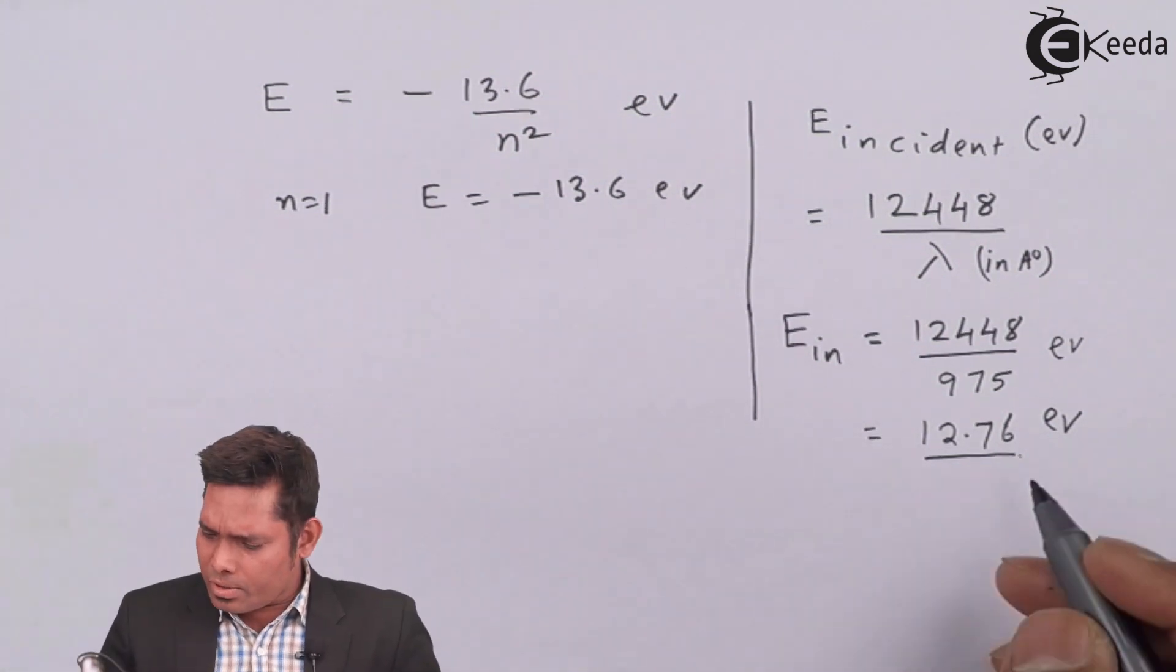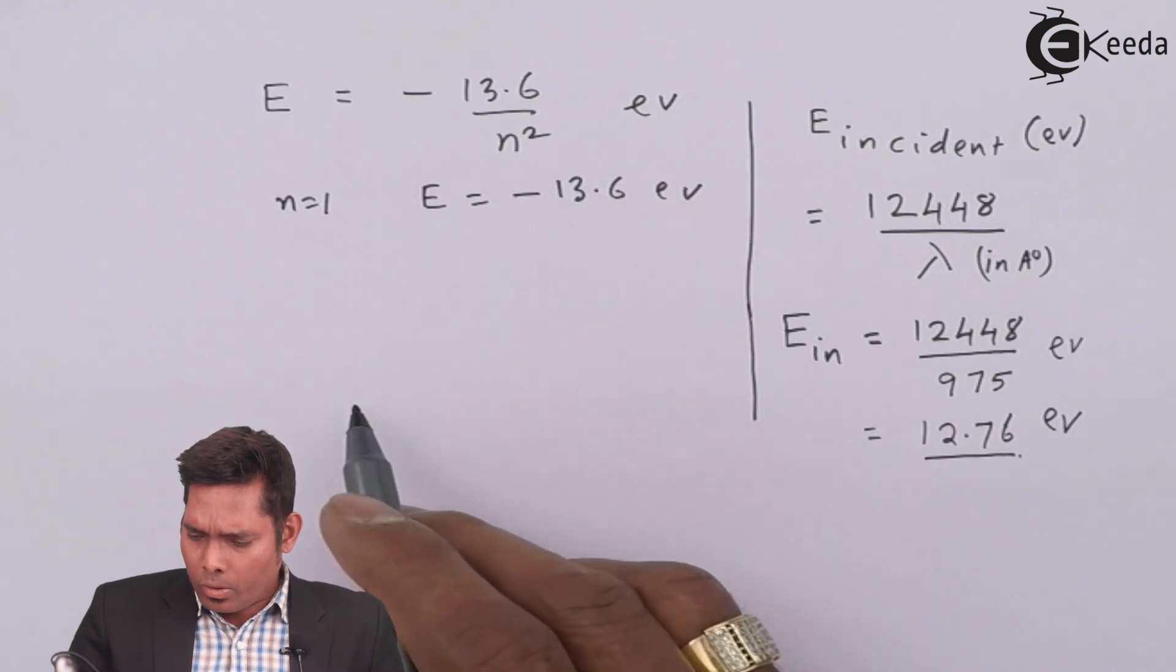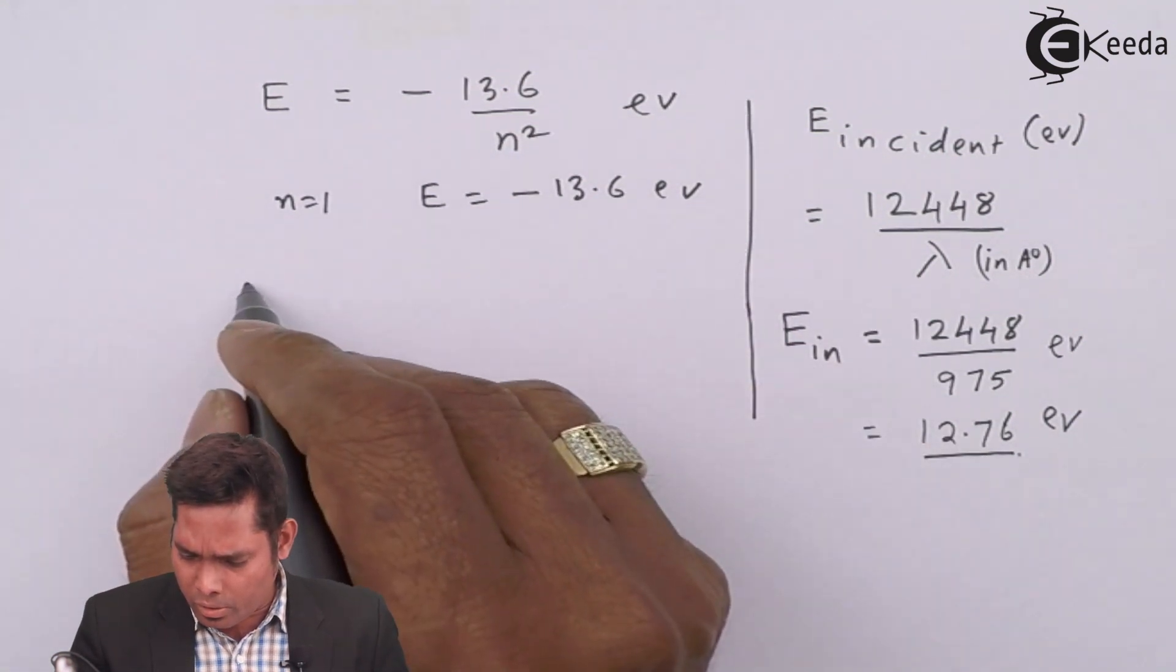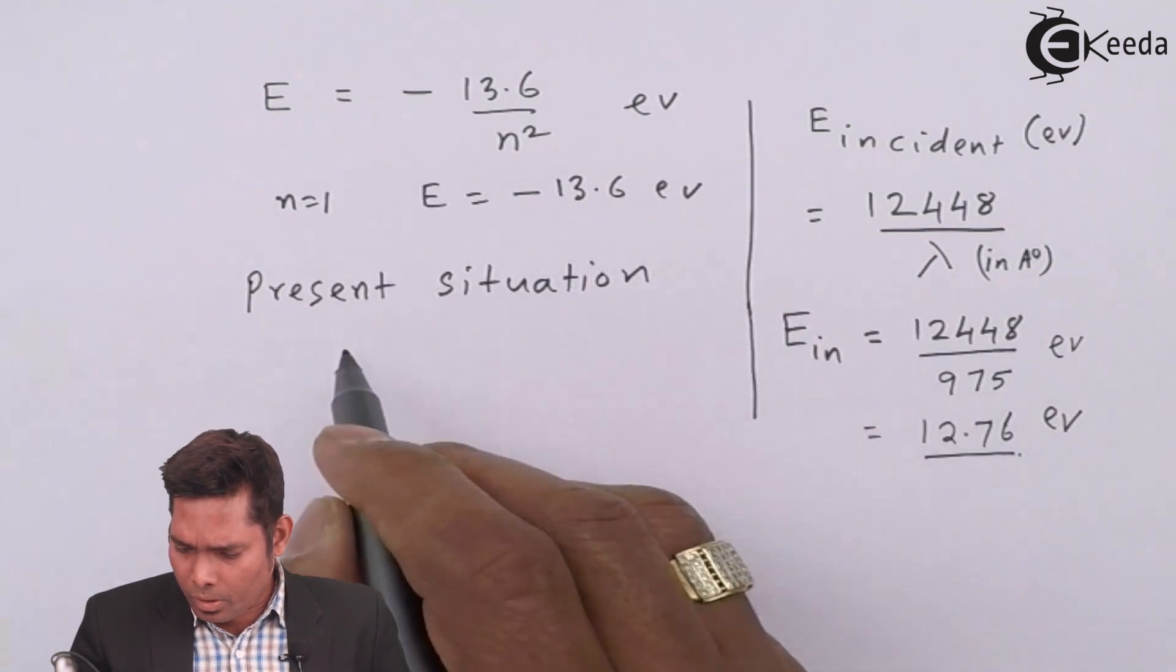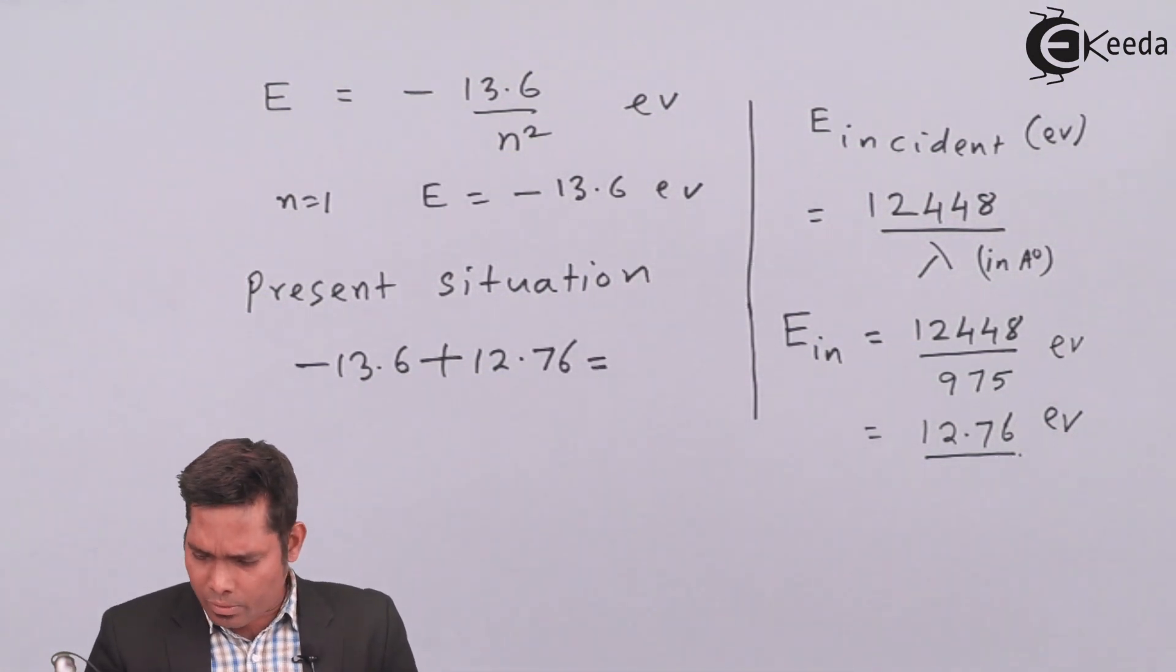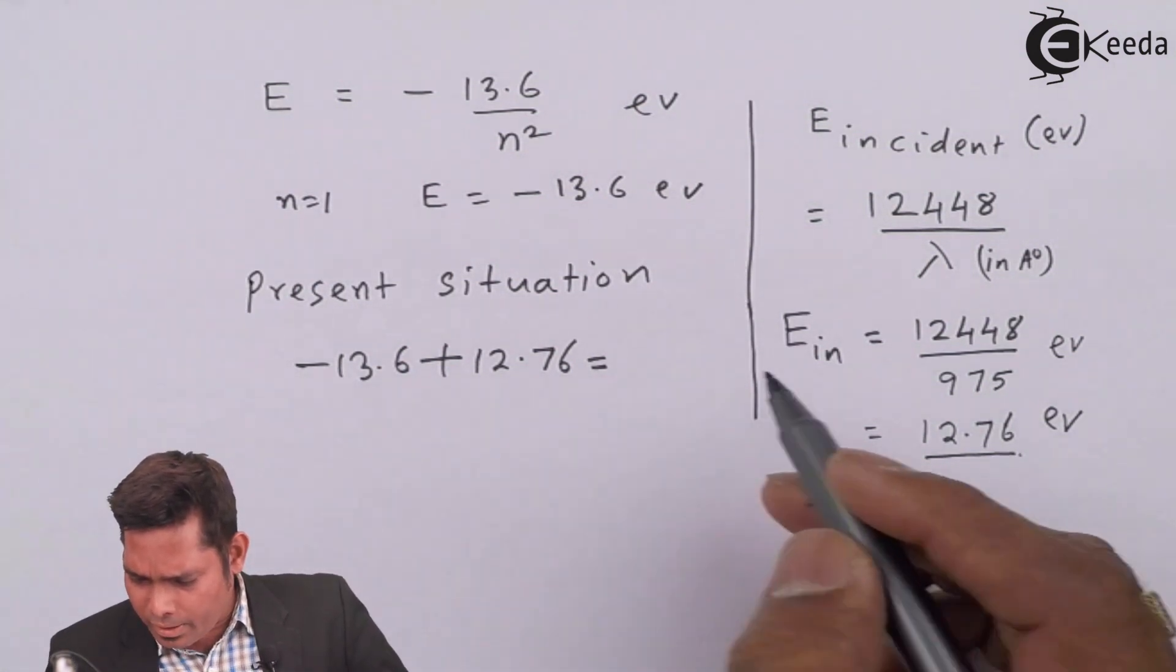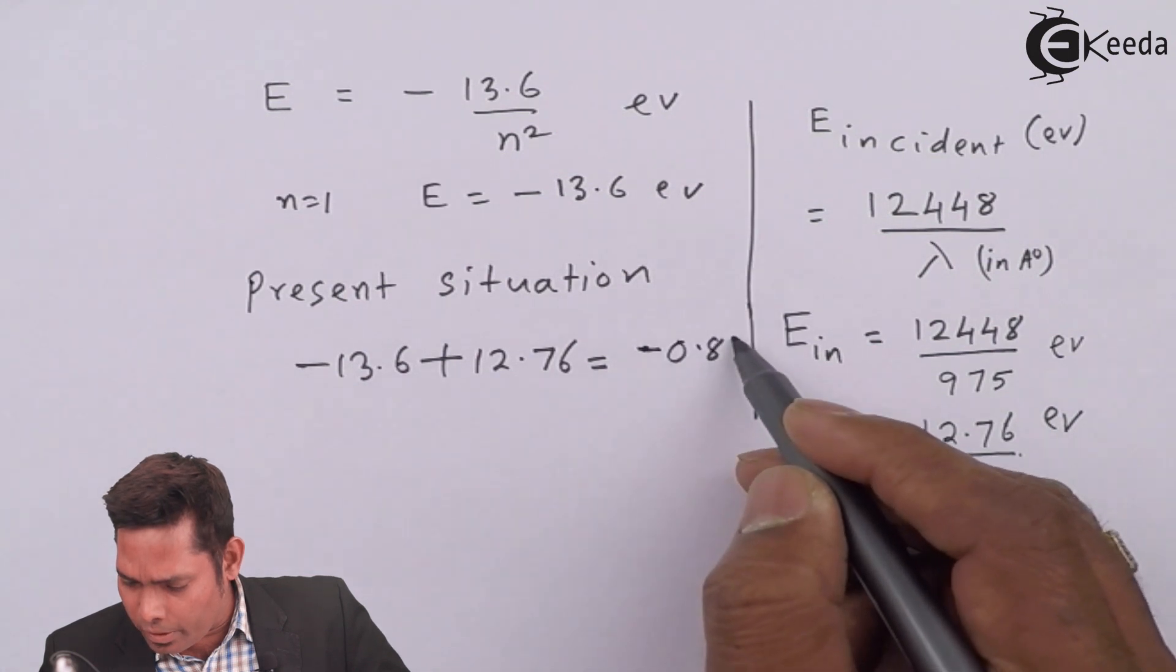Now this 12.76 electron volt, I am applying in positive. So how far this will go? Initially the energy is having this one. So if I apply this energy, the present situation, in present situation, minus 13.6 plus 12.76, that comes out to be, if I do that, I just go for the calculation. Because these are minute calculations, so I do not waste time. 13.6 minus 12.76.